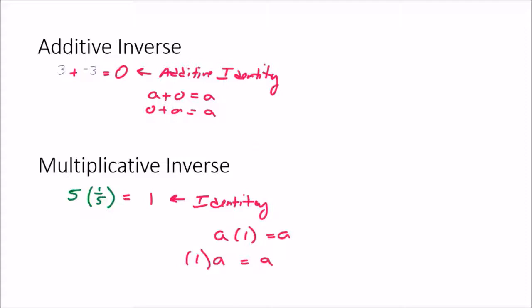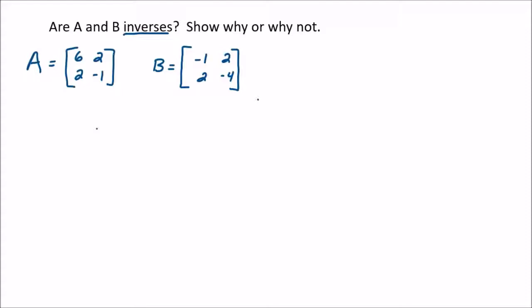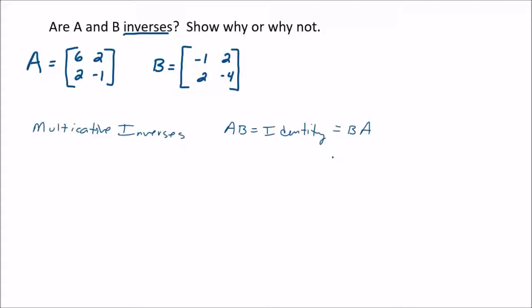Let's go back to our matrix question: are these inverses of each other? If they're inverses of each other — specifically multiplicative inverses — then multiplying them together should give the identity. It doesn't matter what order we multiply them in; B times A or A times B has to give the identity. The identity for matrices is a square matrix that has ones all down the main diagonal. Here, when we have a 2×2 times a 2×2, the identity we're looking for is a 2×2 identity matrix.